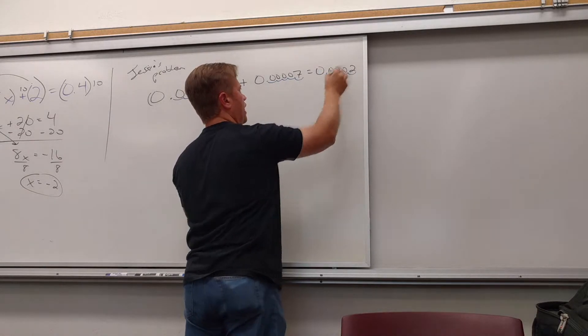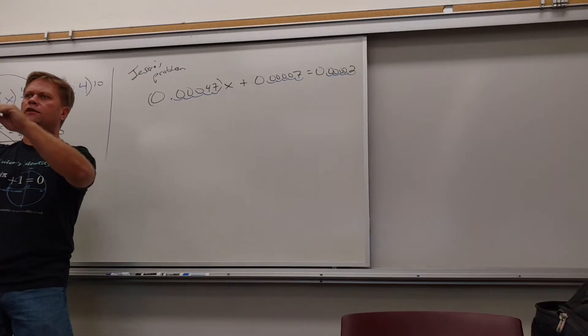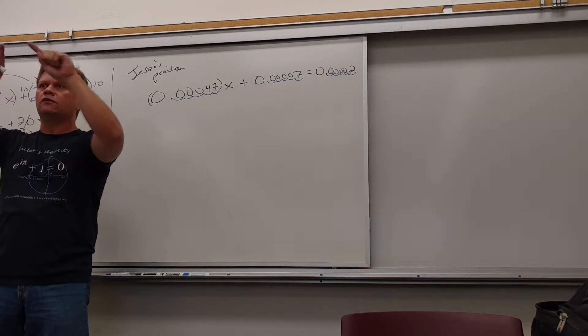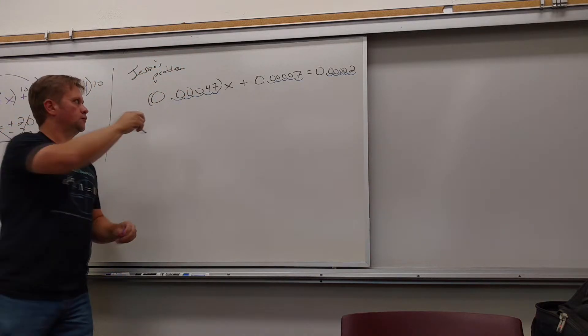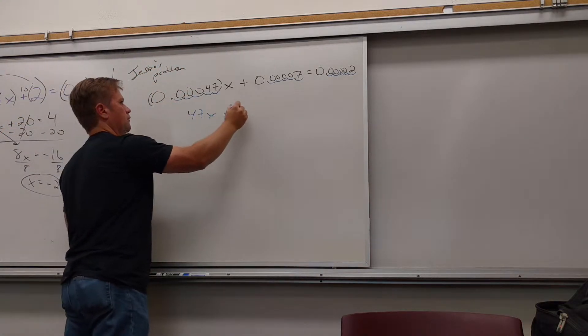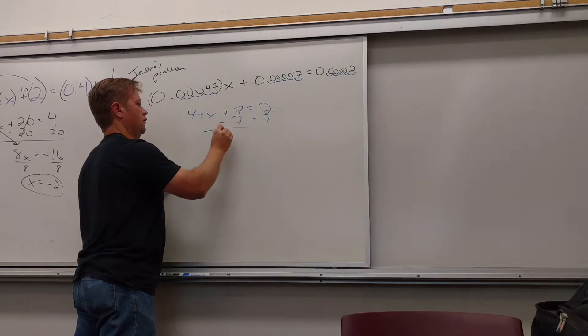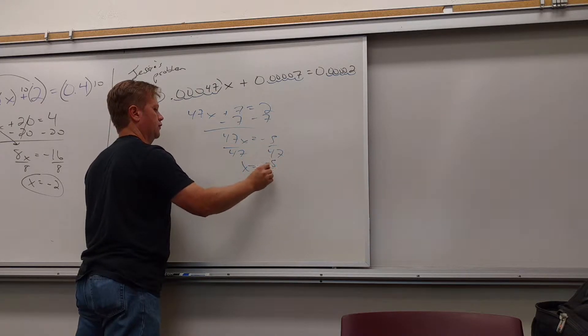So I can just make everybody move. One, two, three, four, five. One, two, three, four, five. So I've done the same thing to both sides. So I don't even have to take it to the level of I need to multiply everything by a hundred or a thousand. I just have to move every term the same amount. So then I get 47x plus 7 equals 2.